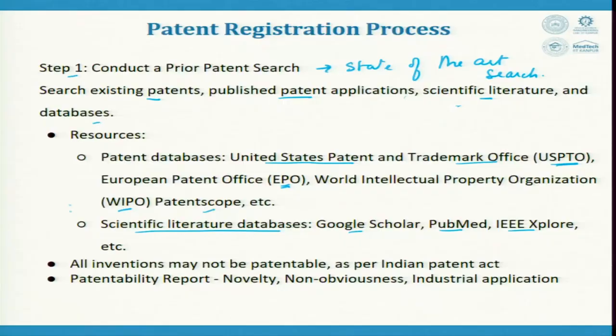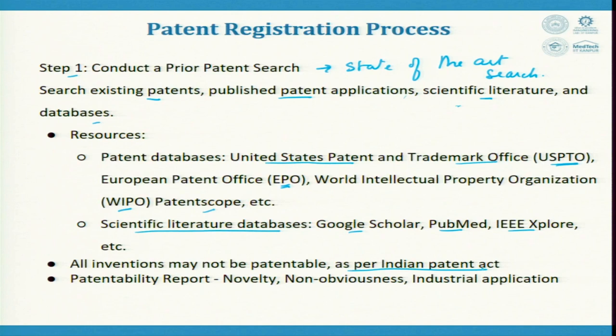When you do innovation, you should follow ethical practices. While searching you might find three or four patents that are not an exact one-to-one match but have a small variation. Try to capture that small variation and present it in your patent, saying that this small variation is the IP of your patent. All inventions may not be patentable as per the Indian Patent Act. The patentable requirements are novelty, non-obviousness, and industrial application.